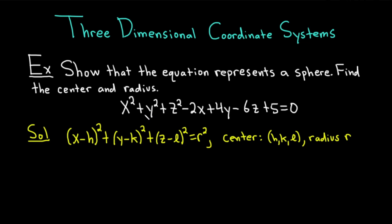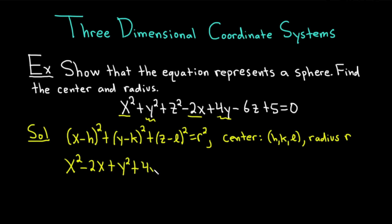Basically, we have to take this equation and write it in sphere form, then identify the center and radius. The first step is to group all of the common variables together. We have x squared minus 2x, then y squared plus 4y, and then z squared minus 6z. We subtract the 5 over to the other side so it becomes negative 5.